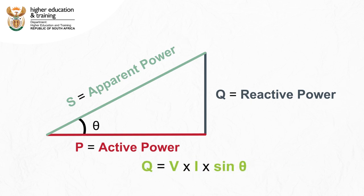Reactive power can also be calculated from this triangle if need be. Reactive power is equal to voltage multiplied by current multiplied by the sine of theta.